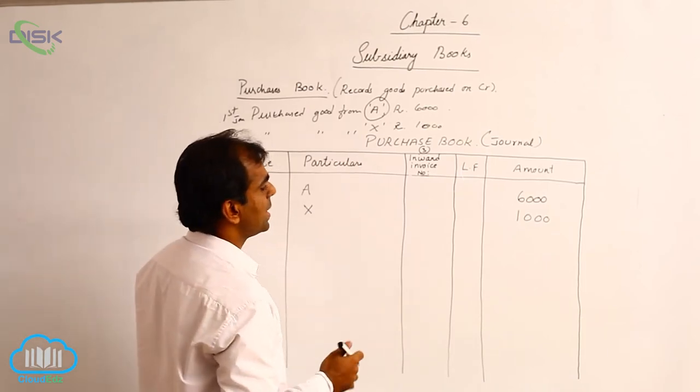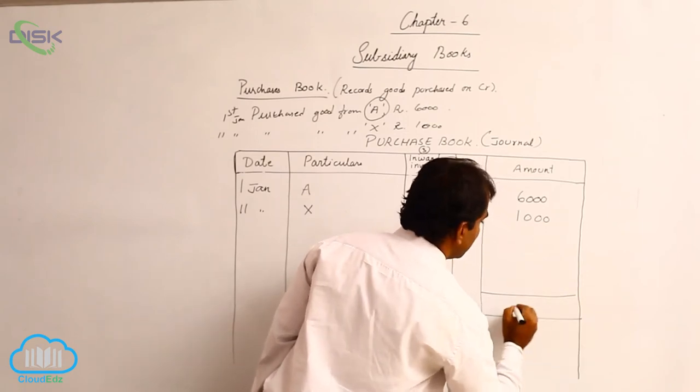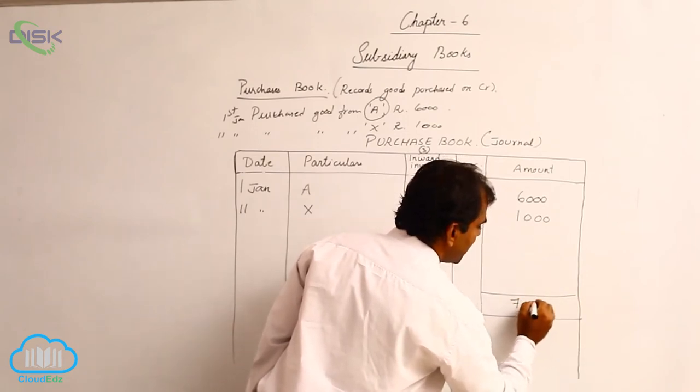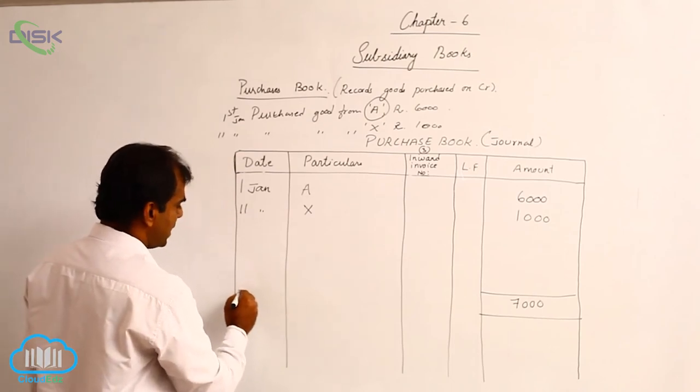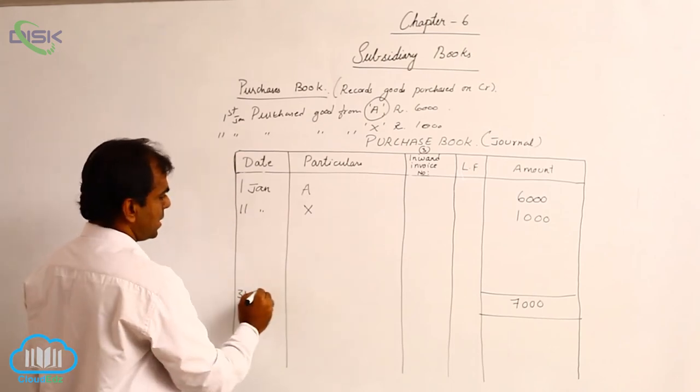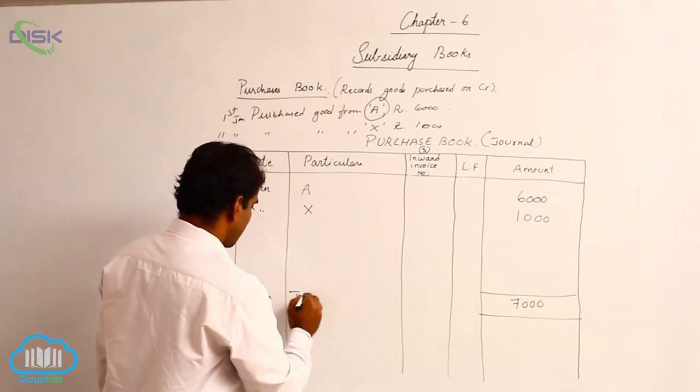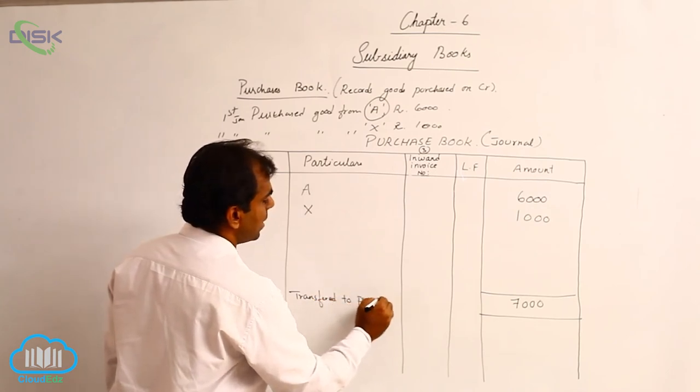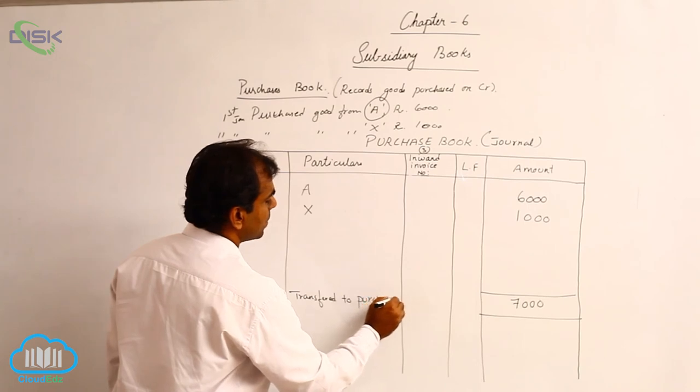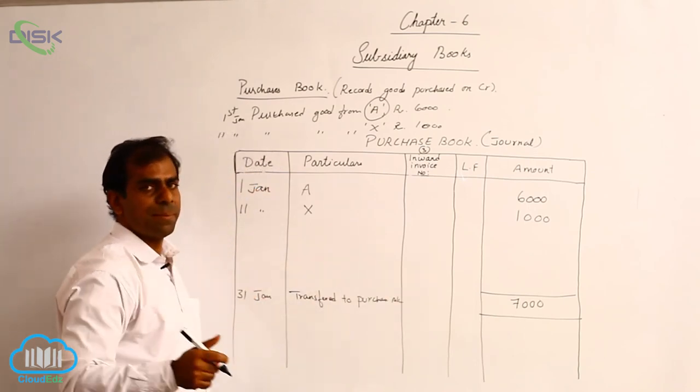Then what we have to do? At the end, we have to total. Let us say here we have 7000. Now the date is usually end of the month. So January has 31 days, so 31st January. Then we say transferred to purchase account. We have to mention this. So this is how we prepare purchase books.